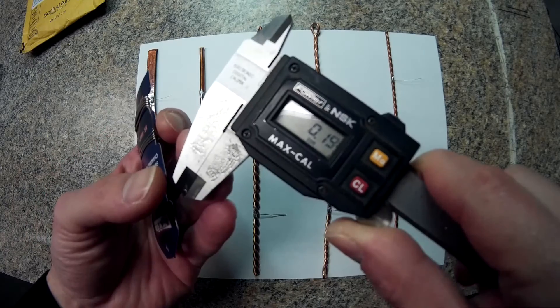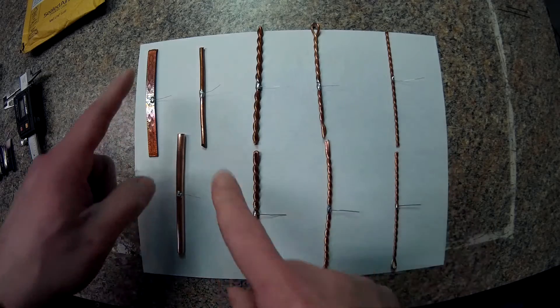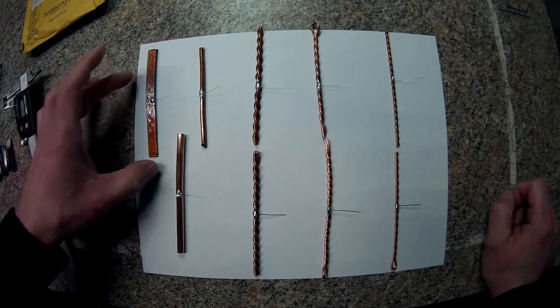We'll do a quick measurement of the 5 amp wire: 0.19 millimeters. 15 amp: 0.49 millimeters.